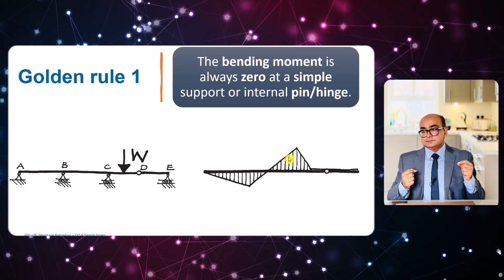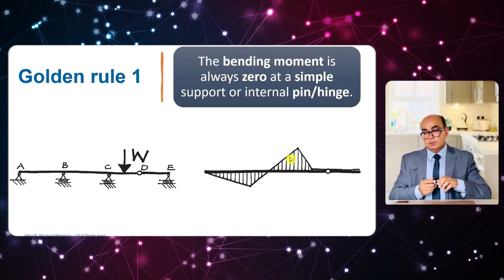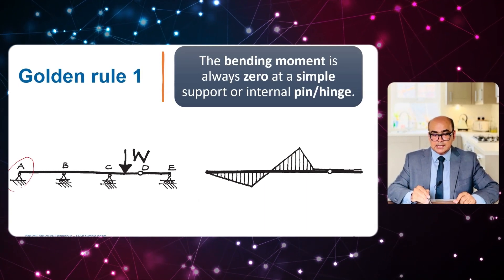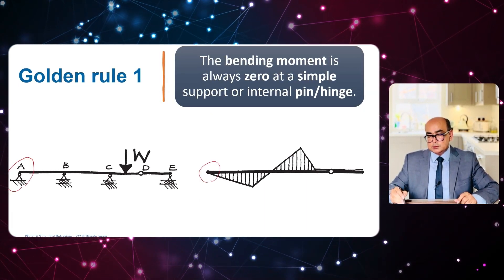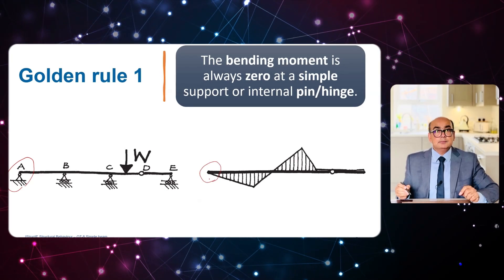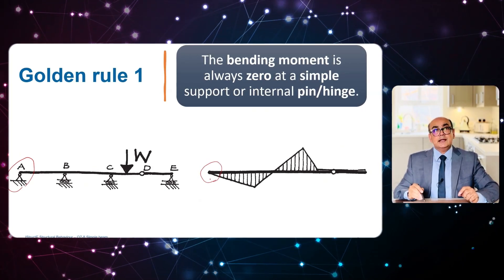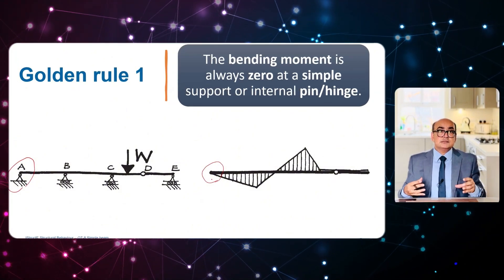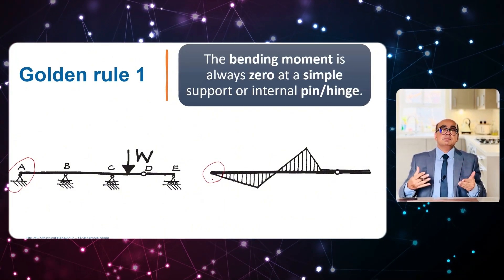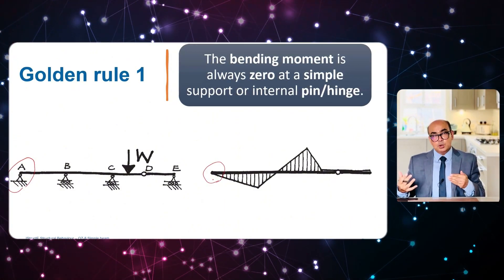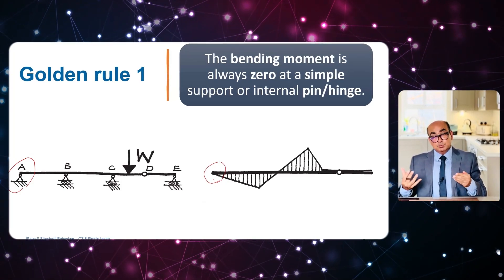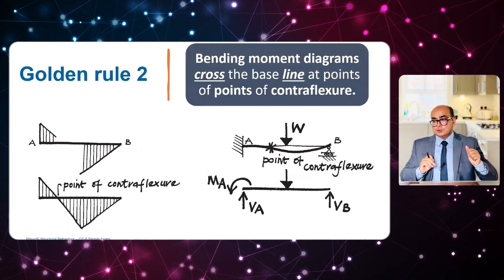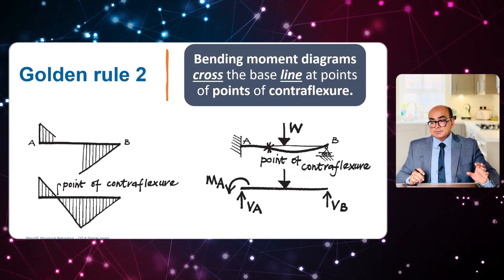The first rule is that the bending moment diagram is always zero at simple supports. Here at A we have a simple support, so the bending moment is zero. At B and C these are continuous supports, so you will always have some kind of hogging moment at those supports. Hogging moment means tension at the top and compression at the bottom.